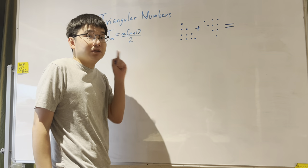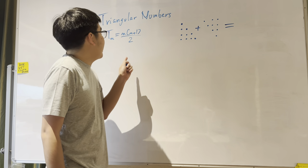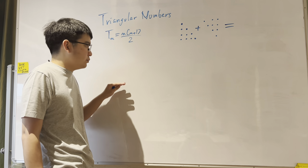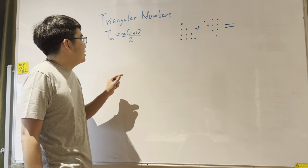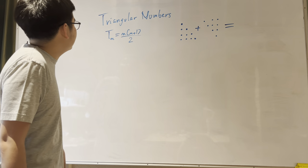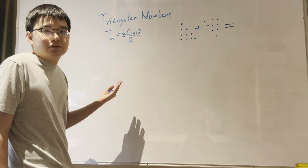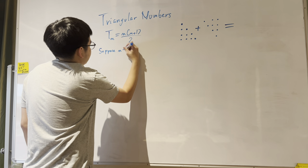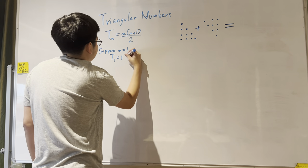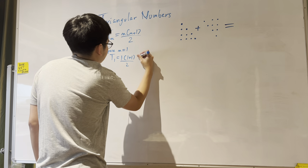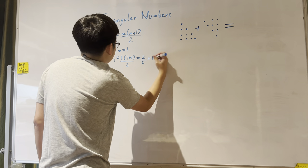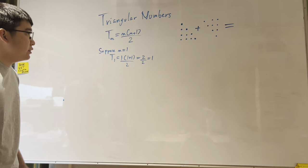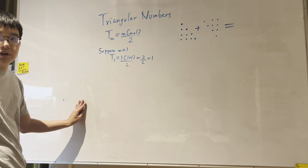Today we're going to look at the triangular numbers formula and how this looks at the number of dots you can count if you put them into a triangular array. We start with the initial value: suppose n equals 1. Therefore t(1) equals 1 times (1 plus 1) over 2, which is 2 over 2, equals 1. That corresponds to one dot.